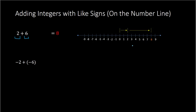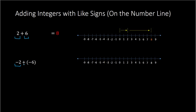Now what if we had negative 2 plus negative 6? On the number line, negative 2 means starting at 0 and going 2 to the left — negatives go to the left. Then adding negative 6 means going from negative 2, 6 more to the left, which takes you to negative 8. So our solution is negative 8.